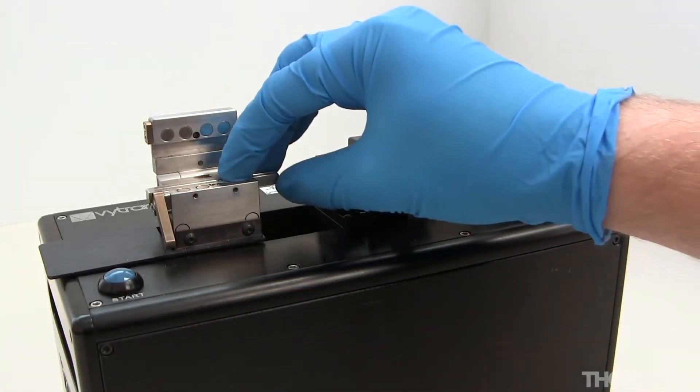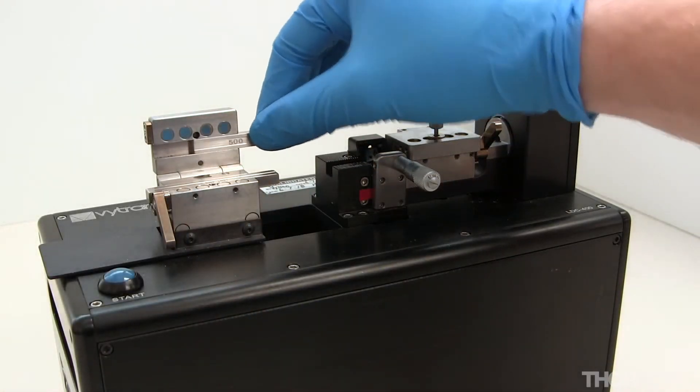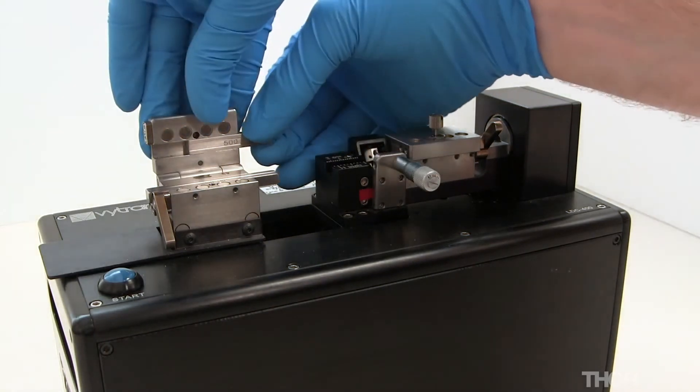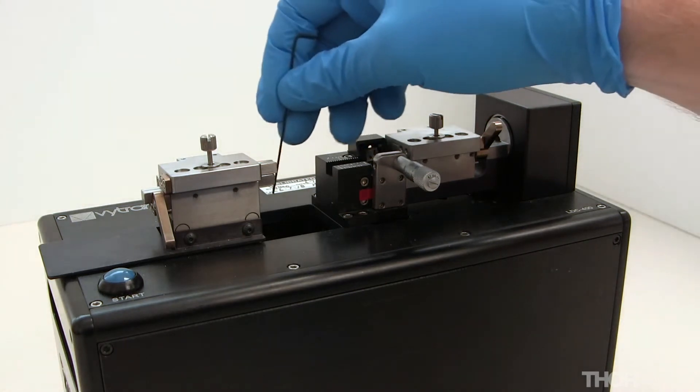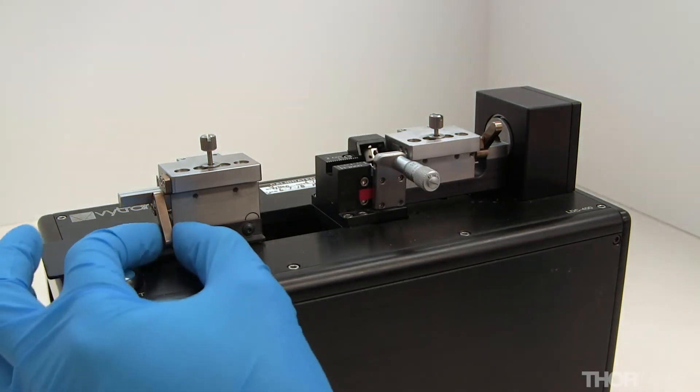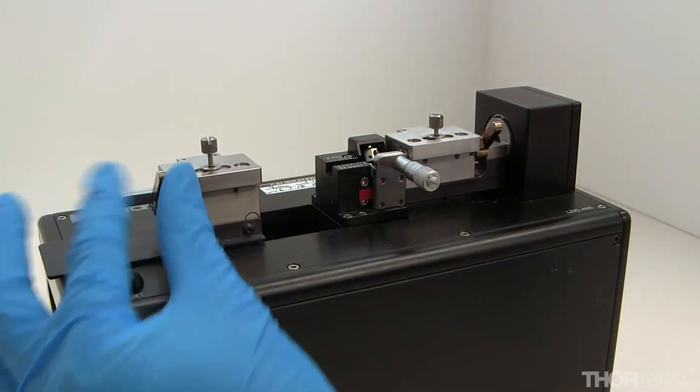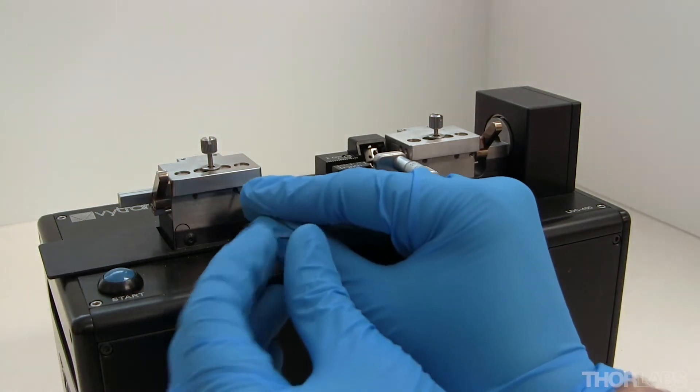Ensure that inserts appropriate for the dimensions of the fiber being cleaved are loaded into the left and right hand side fiber holding blocks. If you have not already watched the video about installing cleaver inserts, click on the annotation to view this first.